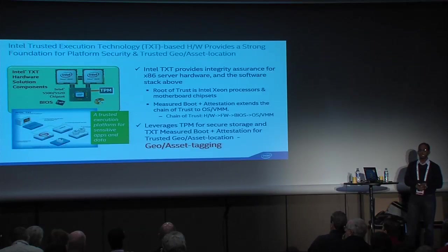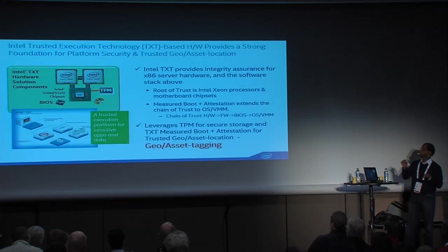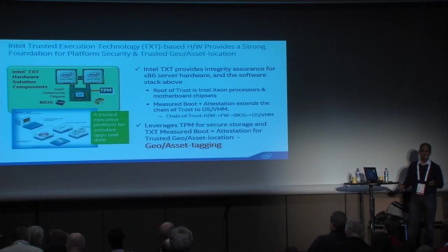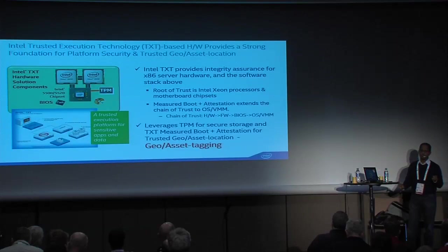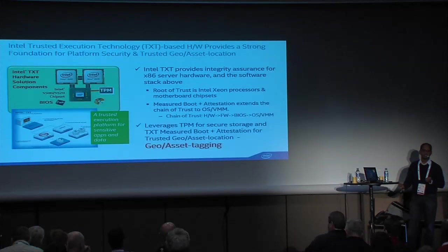The chain of trust we like to assure starts from hardware through the firmware and BIOS into the OS and the hypervisor. We are using the same set of controls available in hardware to write an asset descriptor into the TPM and leverage the same measured boot and attestation process to attest that asset descriptor. That's what we call geotagging or asset tagging.